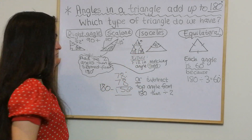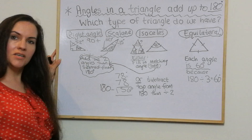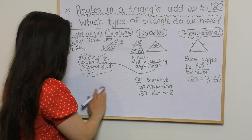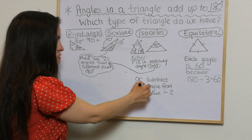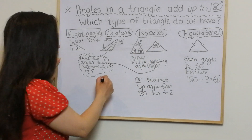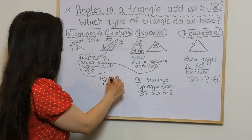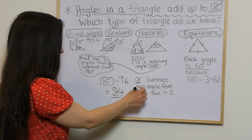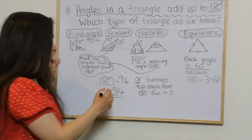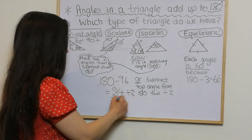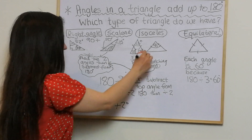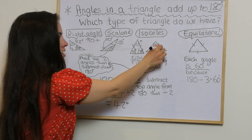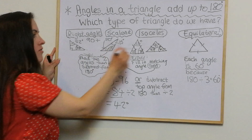Then I subtract 156 from 180: that gives me 24 degrees up there. In this different isosceles case, we've got the top angle given. So as the guide says, you subtract the top angle from 180: 180 take away 96 gives me 84. Then I divide by 2: 84 divided by 2 is 42 degrees. So both base angles are 42 degrees.